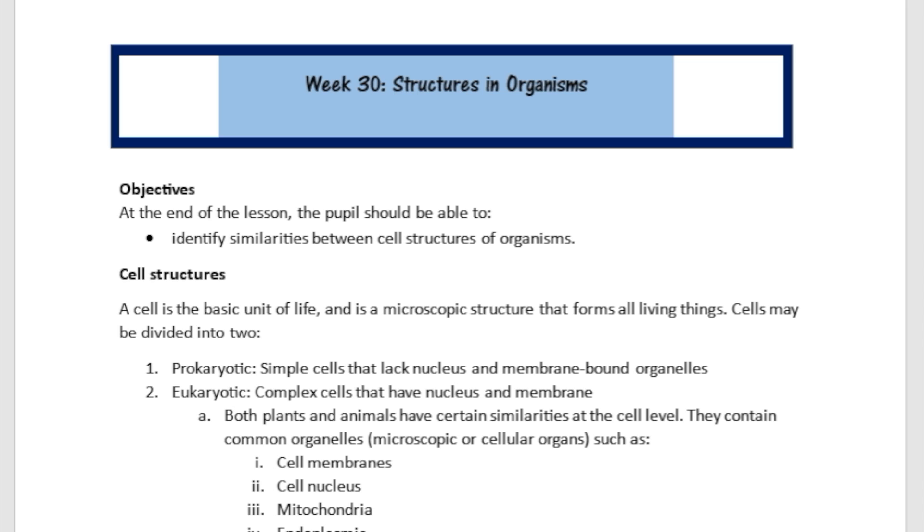And a cell is the basic unit of life, so don't forget that. So just like we talked about atoms before in physics, cells is going to be like the equivalent of what physicists try to explain as the basic unit of matter. Alright, what biologists try to explain. So a cell is going to be the basic unit of life. And it is a microscopic structure that forms all living things. And cells may be divided into two basic categories.